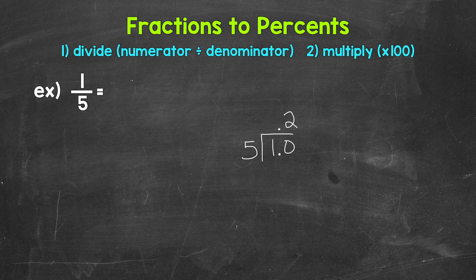And that's going to line us up correctly. Now we multiply: two times five is 10. Subtract: 10 minus 10 is zero. So we end up with that clean zero at the bottom and nothing else to bring down, so we are done. One fifth equals two tenths.